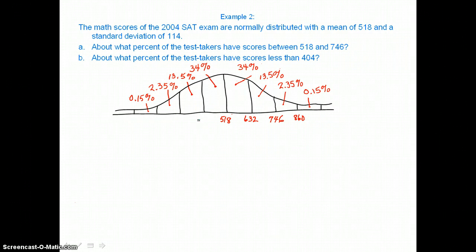And now moving to the left, we'll subtract that standard deviation of 114 from 518 and get 404. We'll subtract 114 from 404 to get 290. And then our last label to the left, we'll subtract 114 from 290 and get 176.